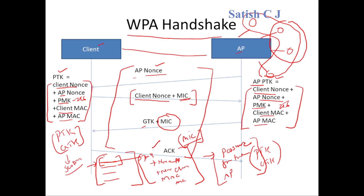I hope you've all understood the WPA handshake. We also covered important concepts: what is WEP, what is WPA, what is WPA2, the key differences between these Wi-Fi security protocols, and how the Pairwise Transient Key is generated using the four-way handshake. If you have any questions, leave them in the comments below. That's it for now — take care.